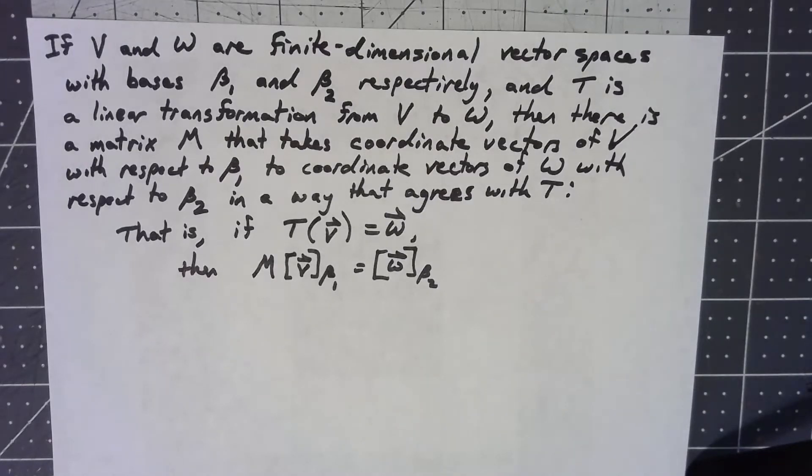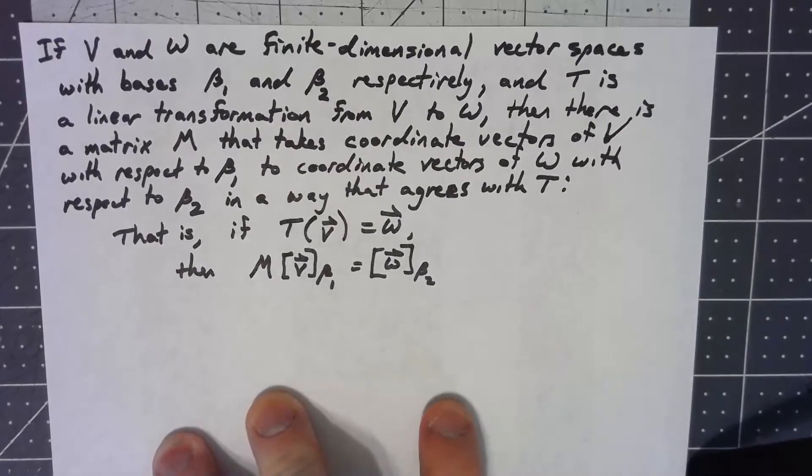However, saying that is almost a little bit deceptive because there is usually a matrix for a linear transformation if we talk about coordinate vectors. Now that does mean we have to be working with finite dimensional vector spaces. If we have an infinite dimensional vector space, we can't do coordinates, none of this applies.